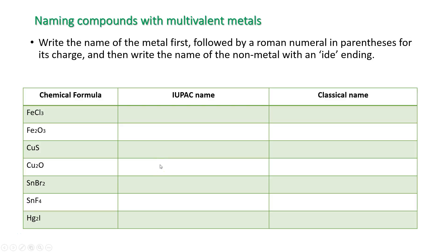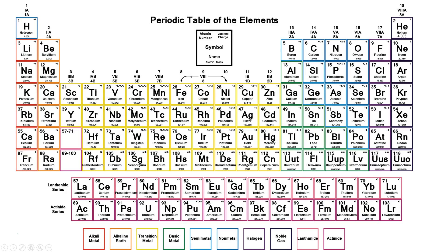In this video I'm going to explain how to name compounds that contain multivalent metals. A multivalent metal is a metal that can have more than one charge. Let's take a look at some of them.